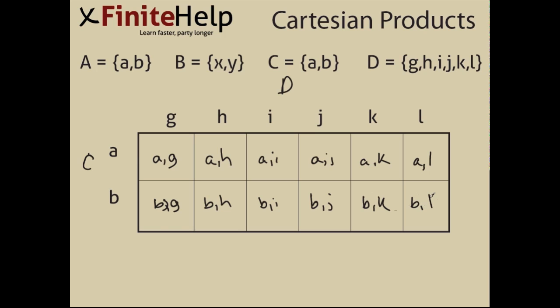After you have all your elements, you simply take them, put them within brackets, and create your ordered pairs. Which would look like this.